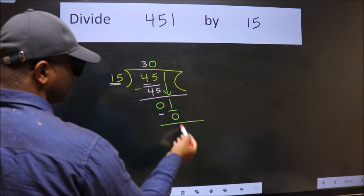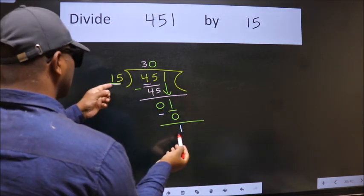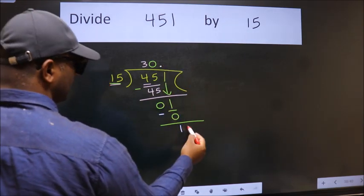Over here we did not bring any number down. And 1 is smaller than 15. So now we can put dot and take 0.